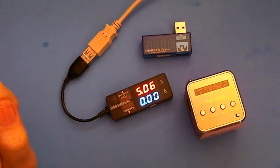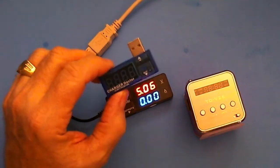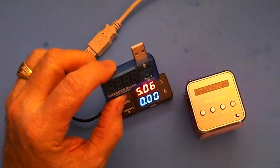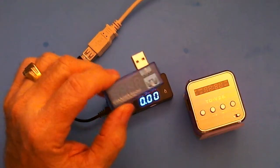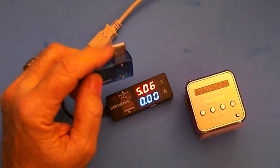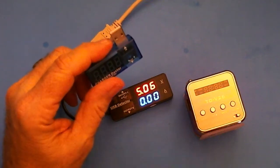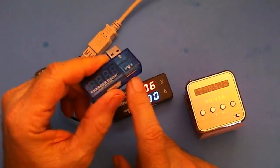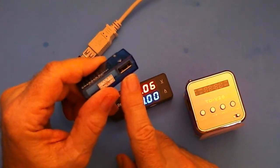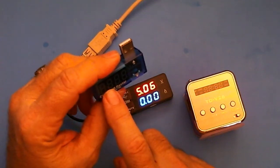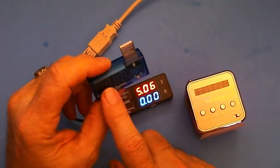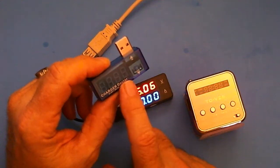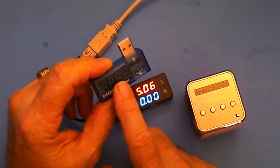I had bought this little guy here, this is called the charger doctor, and it plugs into your USB port and it displays on here. Then you can plug your device in this side and it displays the voltage going to that device and the current, but it only has one display.